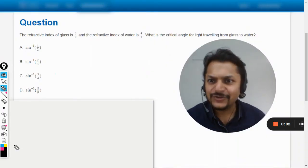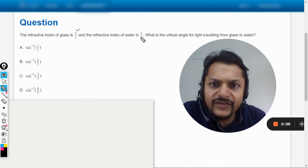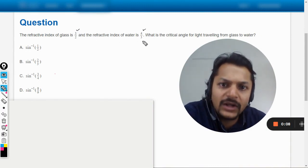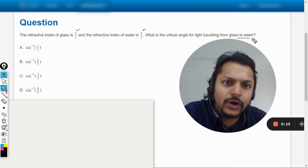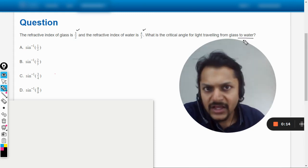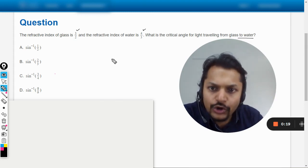Okay dear students, let us see what is there in this question. The refractive index of glass is 3 by 2, the refractive index of water is 4 by 3. What is the critical angle of light traveling from glass to water? So we have to find the critical angle when the light is traveling from glass to water.